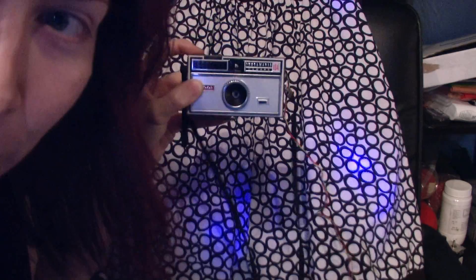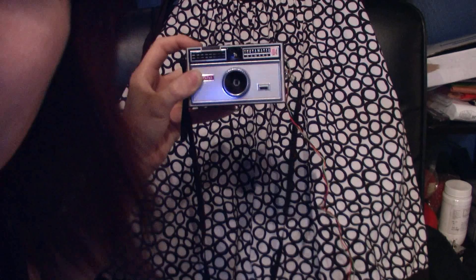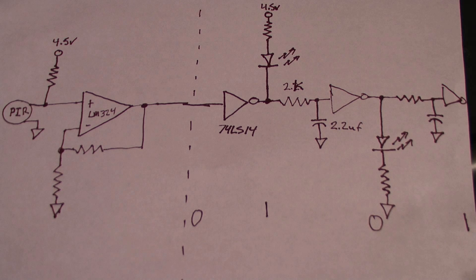Even though the circuit's pretty simple, the light pattern is kind of complex because of the motion in front of the PIR sensor. Let me go ahead and show you the circuit and explain how it works.